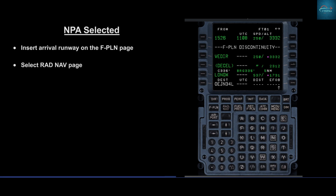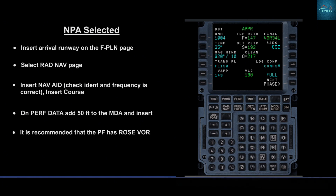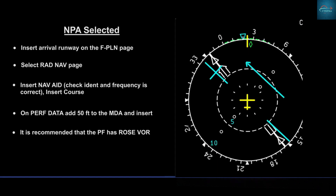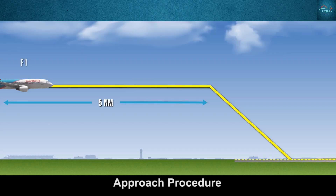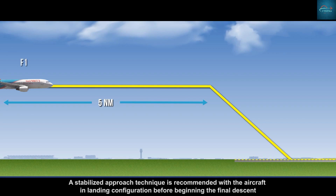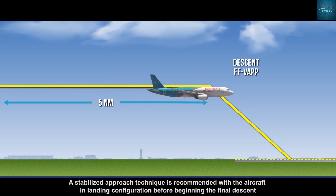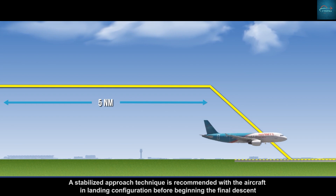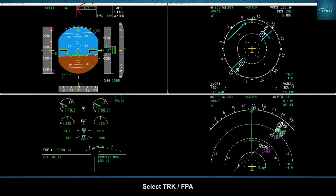Insert arrival runway on the flight plan page. Select the RADNAV page, insert navigation aid, insert course. On performance data, add 50 feet to the MDA and insert. It is recommended that the pilot flying has ROS VOR. Use raw data and fly the aircraft using track and flight path angle. A stabilized approach technique is recommended with the aircraft in landing configuration before beginning the final descent.